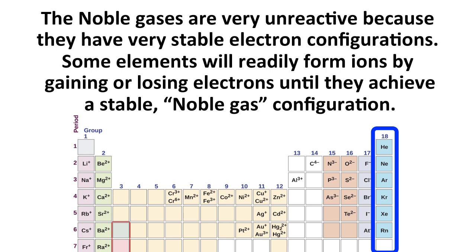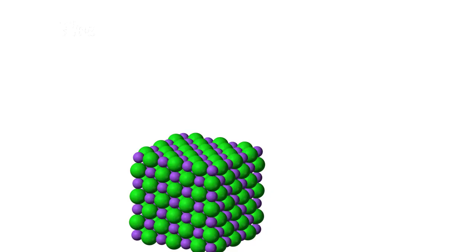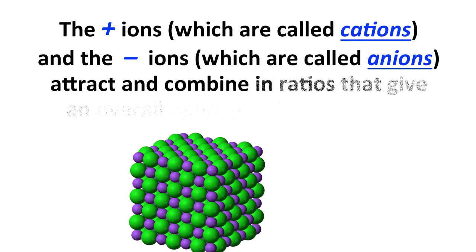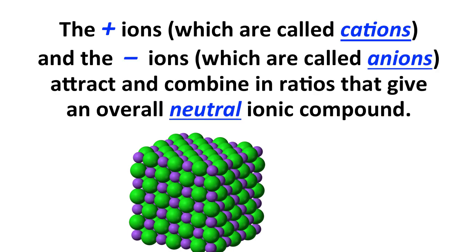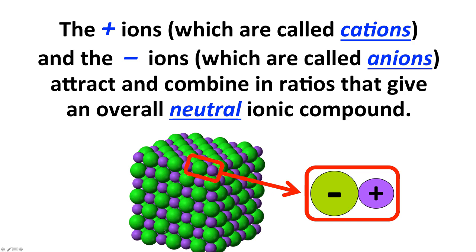We can predict, for main group elements at least, the charge of ion they form by their position in the periodic table, the group that they are in. When this happens, the positive ions that are formed, we call positive ions cations, and the negative ions that are formed, we call negative ions anions, they attract each other and they combine in ratios that give an overall neutral ionic compound. This is an example showing on atomic level positive ions and negative ions in a big three-dimensional array attracting each other, and a positive one and a negative one sort of neutralize each other in terms of charge, and that gives an overall neutral ionic compound.